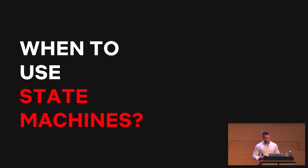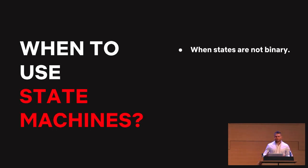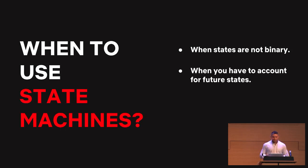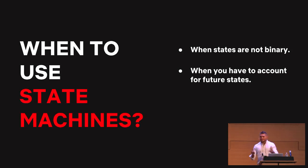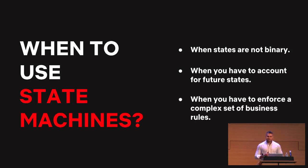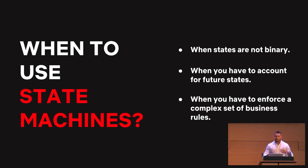When to use a state machine: when states are not binary — if you have something more than true or false, one and zero, yes or no, you may want to consider a state machine. When you have to account for future states — and this is not about over-engineering, it's about knowing you're going to add new states or remove some states soon. And when you have to enforce a complex set of business rules. As we saw, even with just three or four states and rules it got fairly complex. Delegating that complexity to a state machine lets you focus on implementing the functionality you want to write.